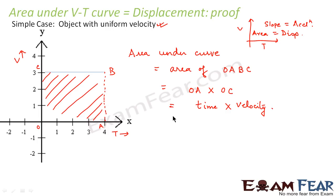Now what is velocity into time? We already know, just recall from what we have studied before. Velocity is equal to displacement divided by time. So displacement would be equal to velocity into time, that means time into velocity will be equal to displacement. Hence it is proved that area under a velocity time curve is equal to the displacement of the object.